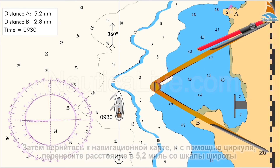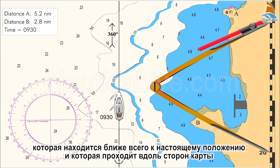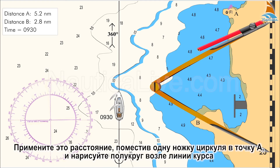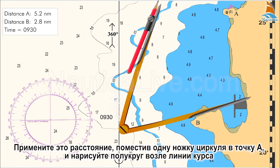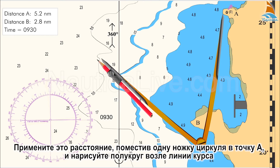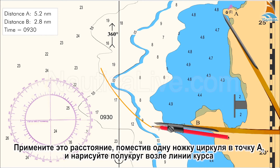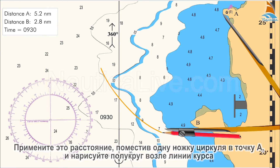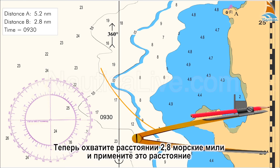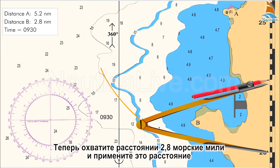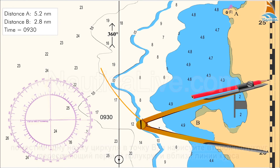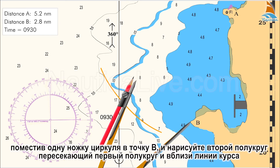Then return to the nautical chart and using the dividers, span a distance of 5.2 nautical miles on the latitude scale closest to the present position, which runs along the sides of the chart. Apply this span placing one leg of the dividers at point A and draw a semicircle near the course line. Now span a distance of 2.8 nautical miles and apply this span placing one leg of the dividers at point B and draw a second semicircle intersecting the first.